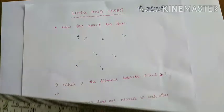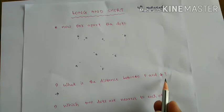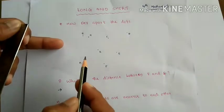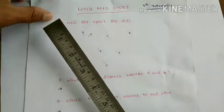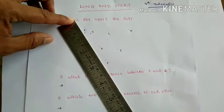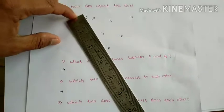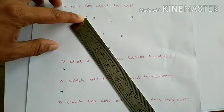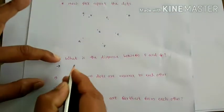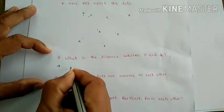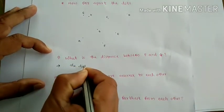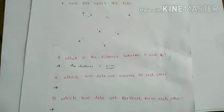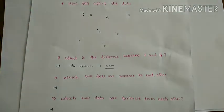Now let's check the distance between F and G. Here is G and here is F. We measure with the scale, and the distance is about five centimeters. So the distance between F and G is five centimeters.